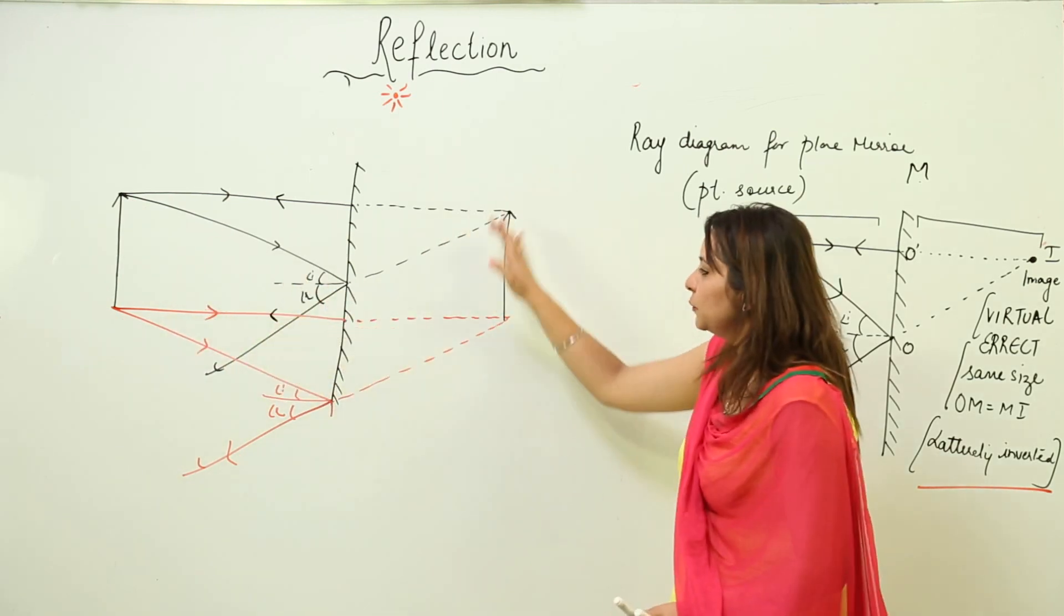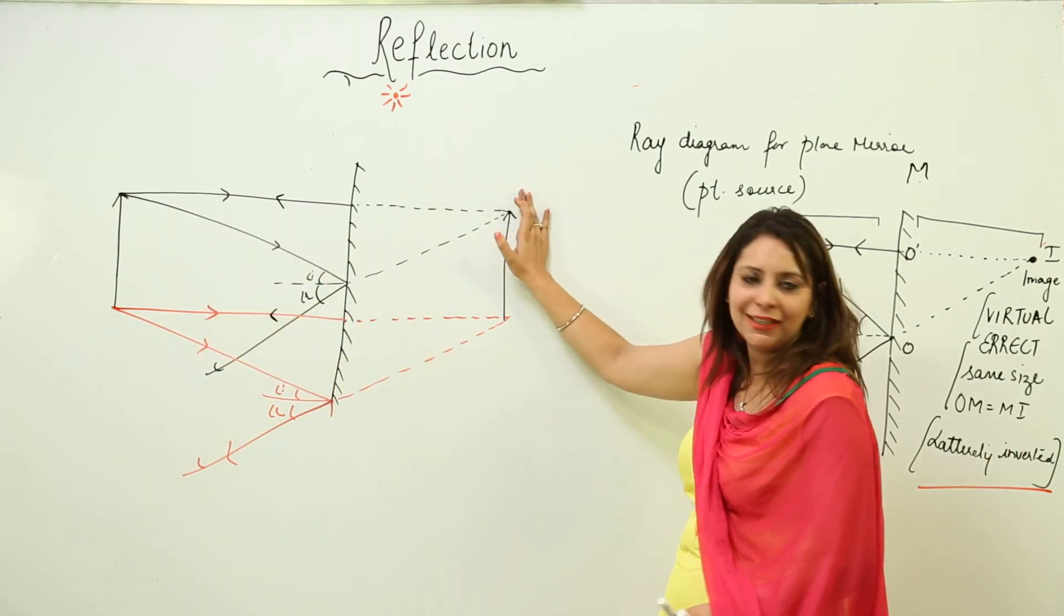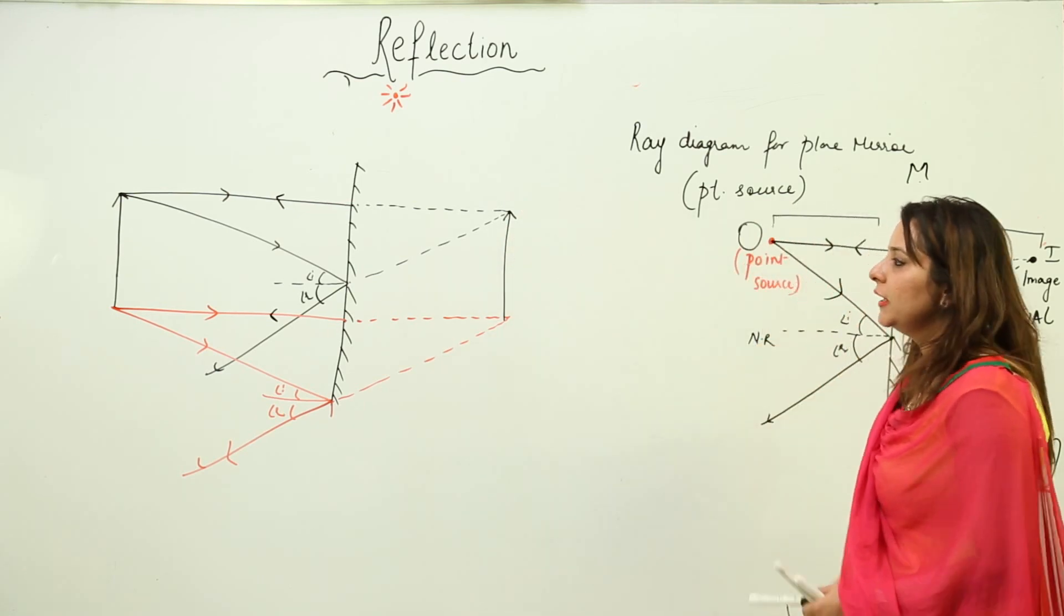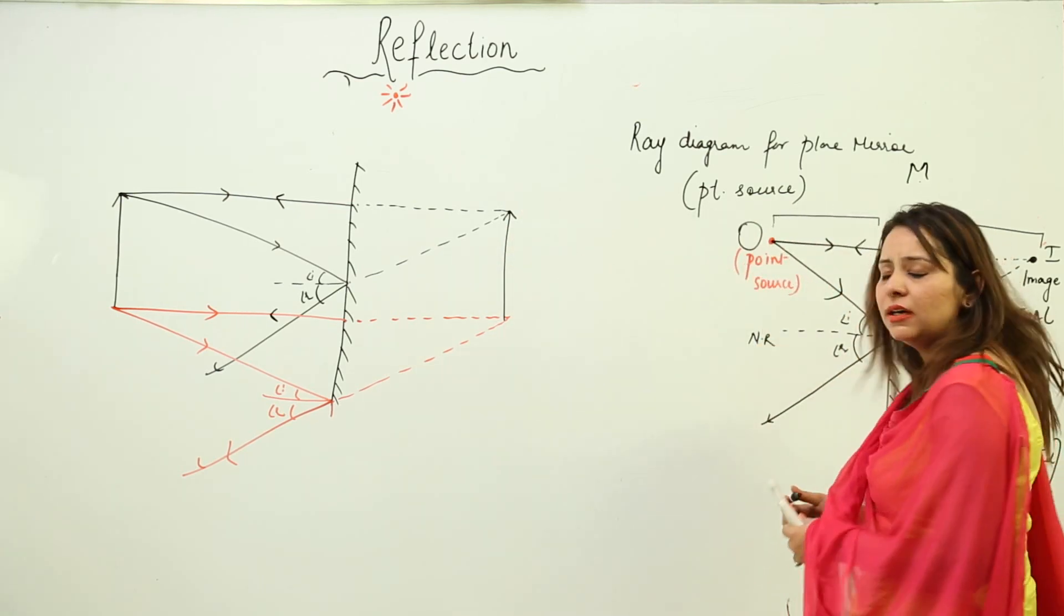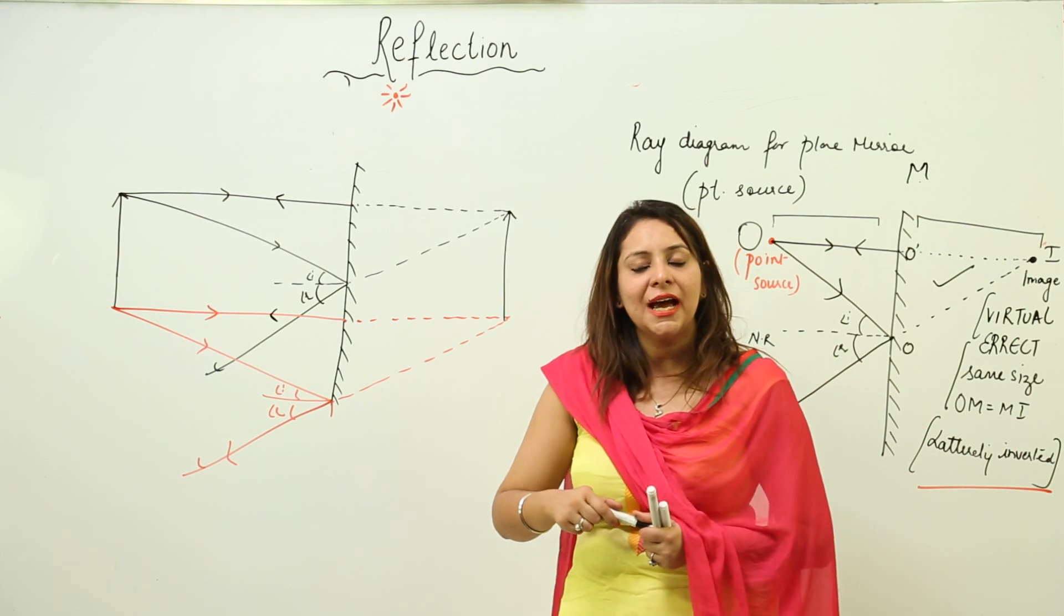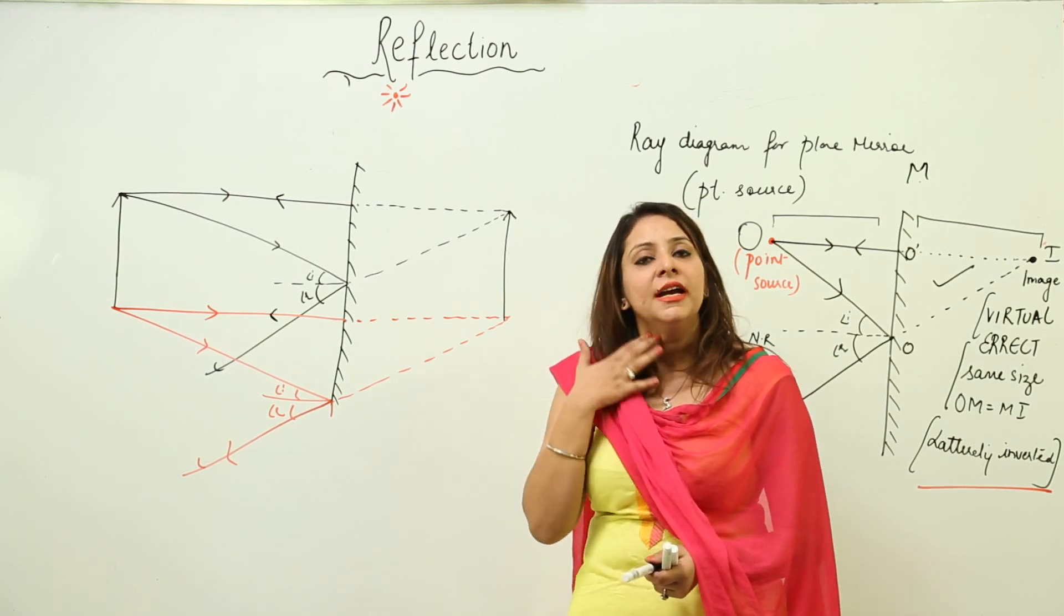What we did: we did it from the upper point and the lower point, and we got a complete finite object. The characteristics are the same: virtual, erect, same size, distance of object from mirror is same as mirror to image, and it is laterally inverted.